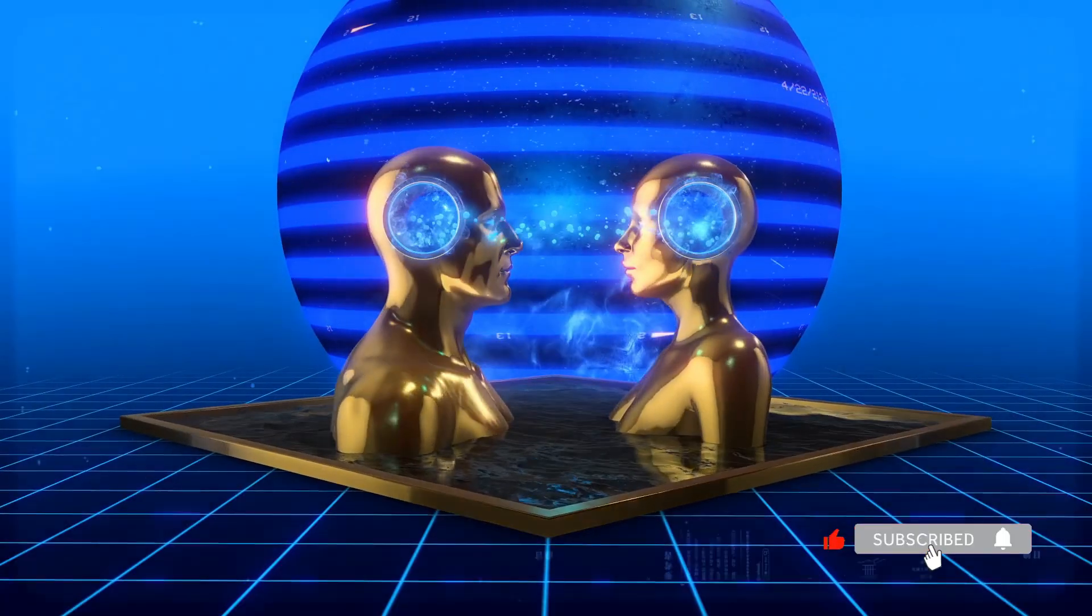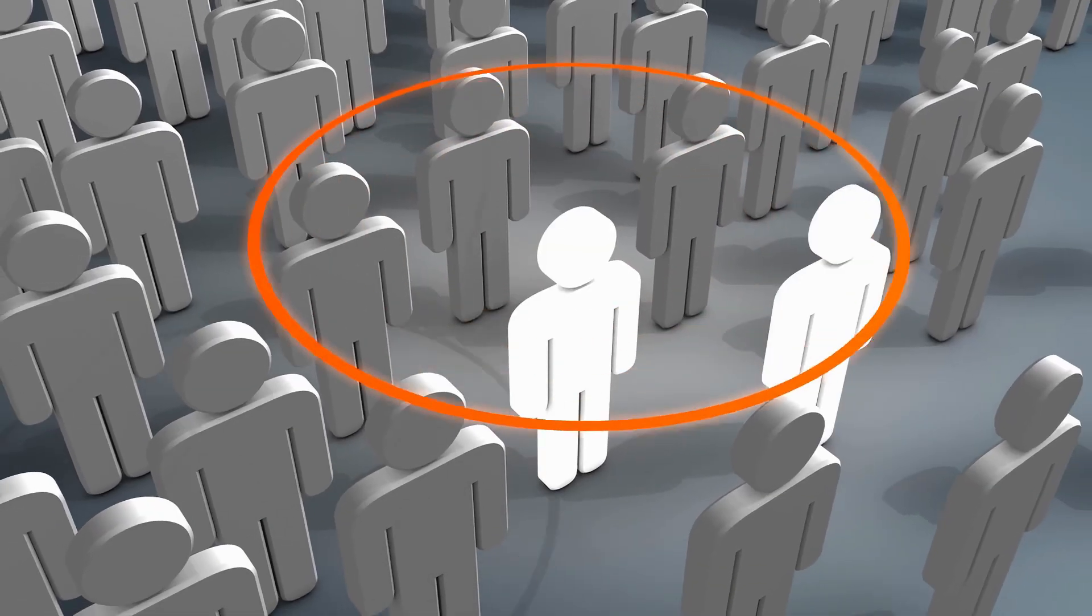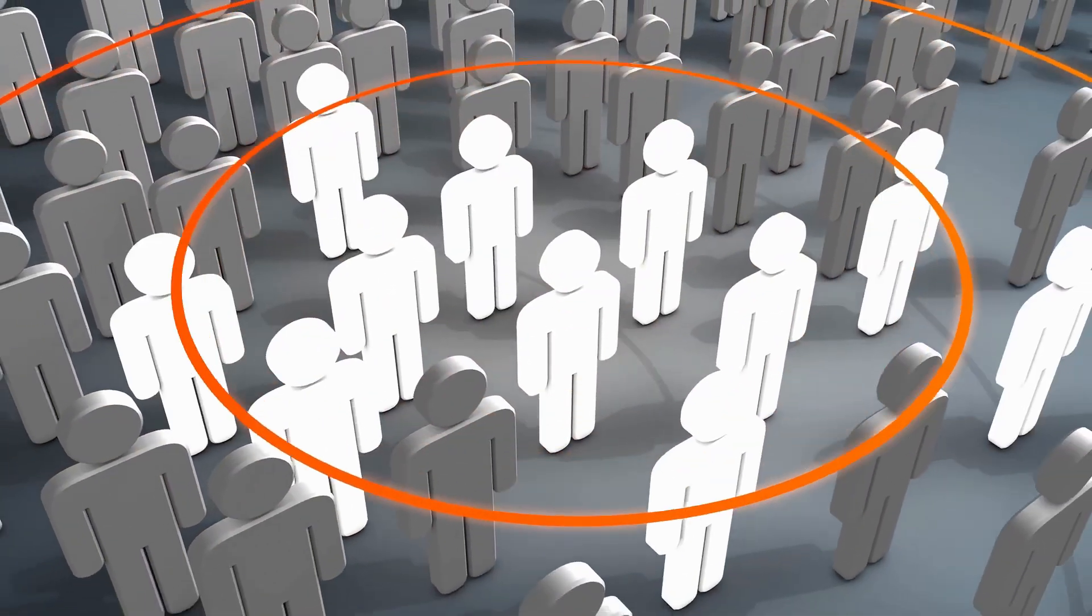Your brain has mirror neurons that literally mimic the people around you. Their habits, thinking patterns, emotional states. Intelligence isn't just individual. It's social.